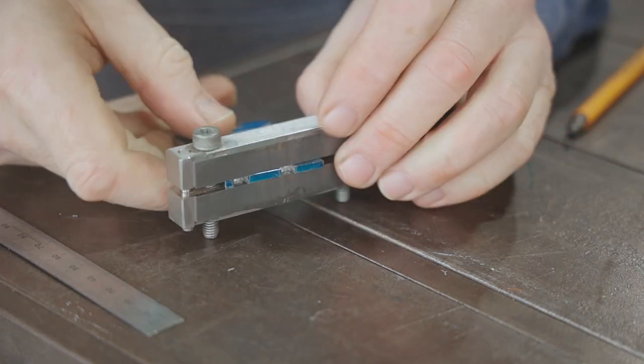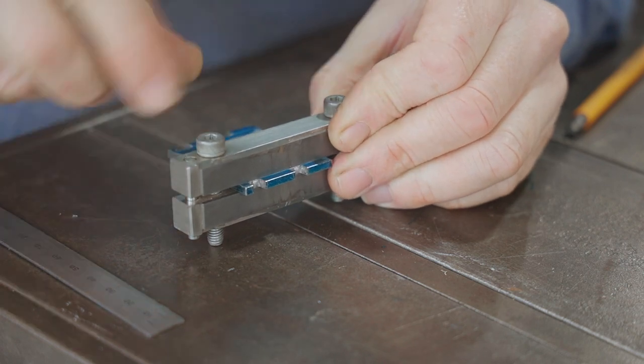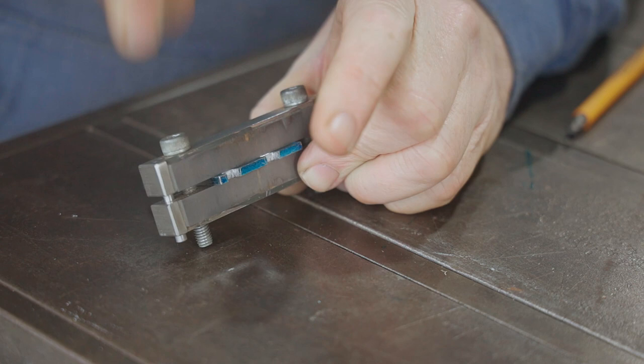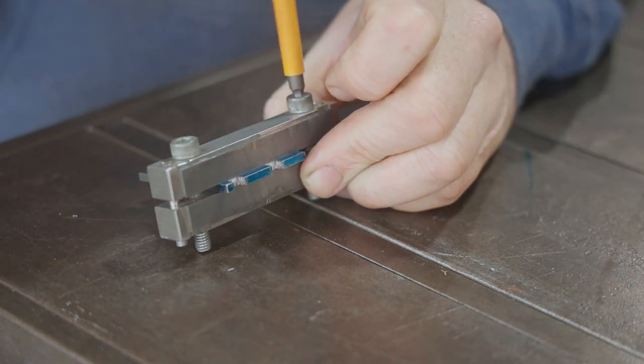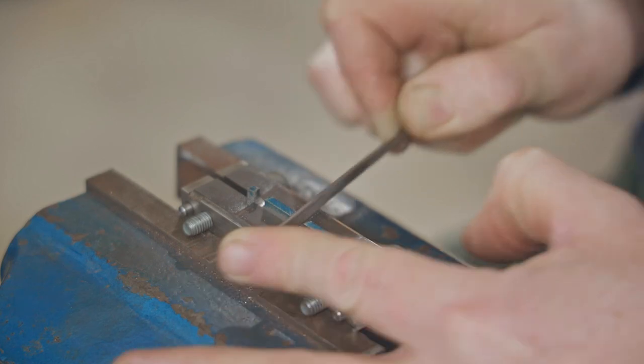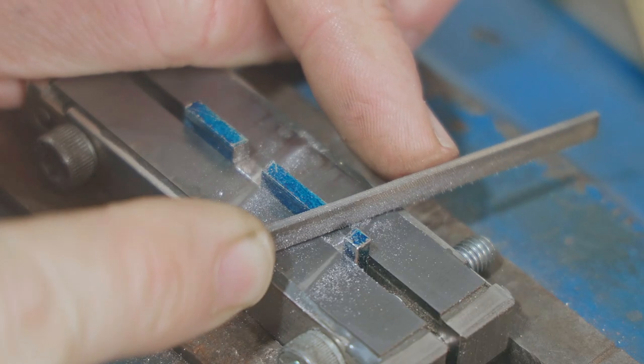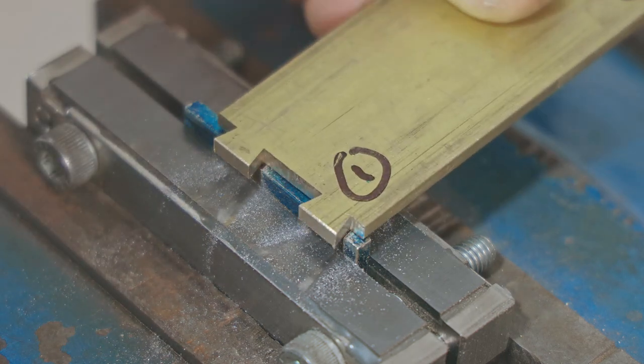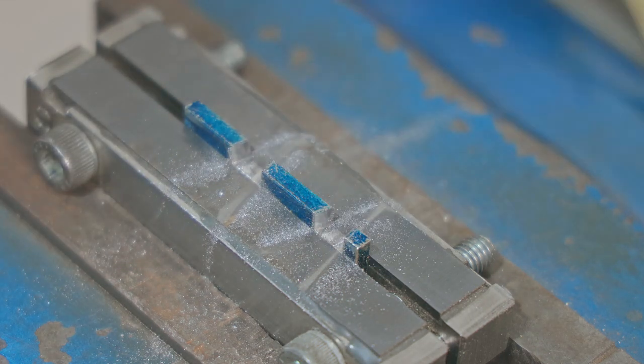To help with the filing and keep things accurate I'll use a file guide. There isn't much to take off and it takes no time at all to fit the joins. The file guide really does make things easy as I only have to worry about the file cutting in the one direction.